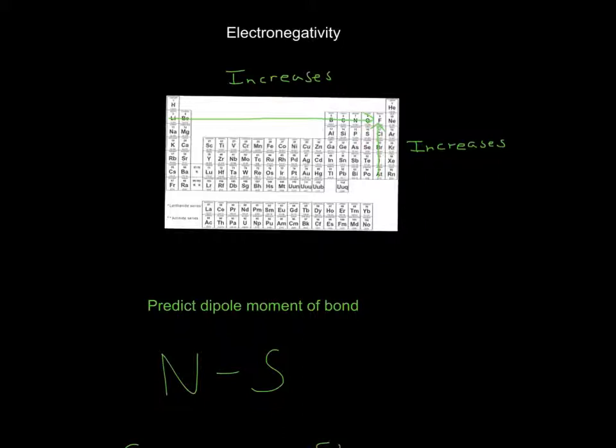Right here. This one's kind of tricky, right, because they're actually diagonal. Which one wins? Because this one is above sulfur, but sulfur is to the right of nitrogen. In these types of cases, the one above actually wins. If you have a diagonal,